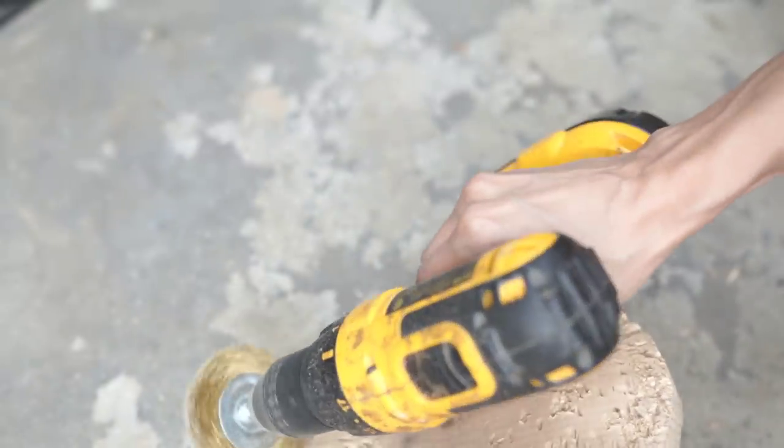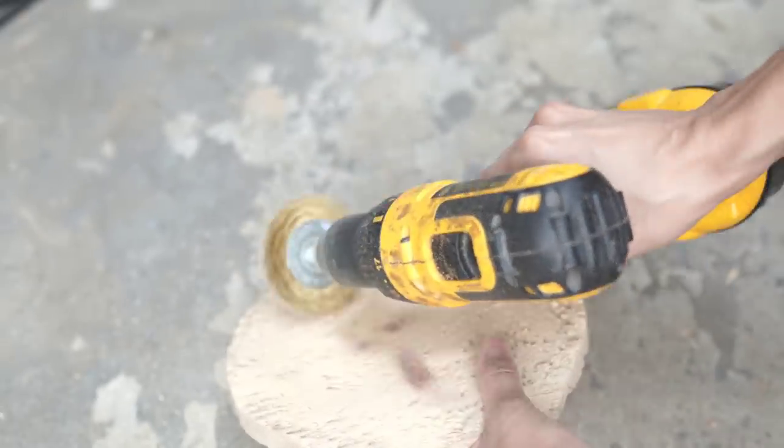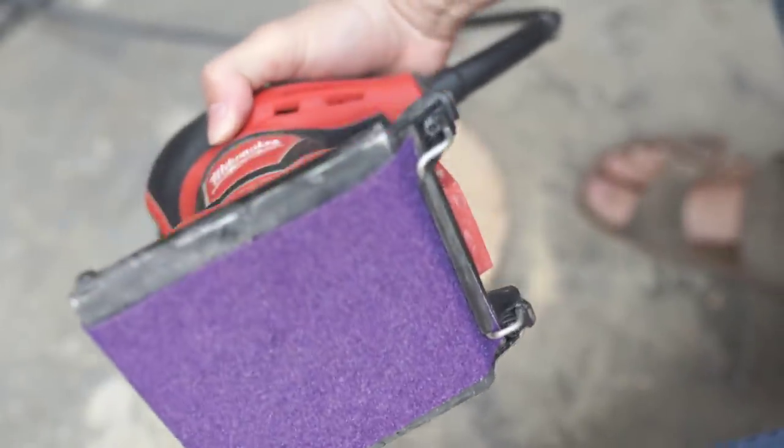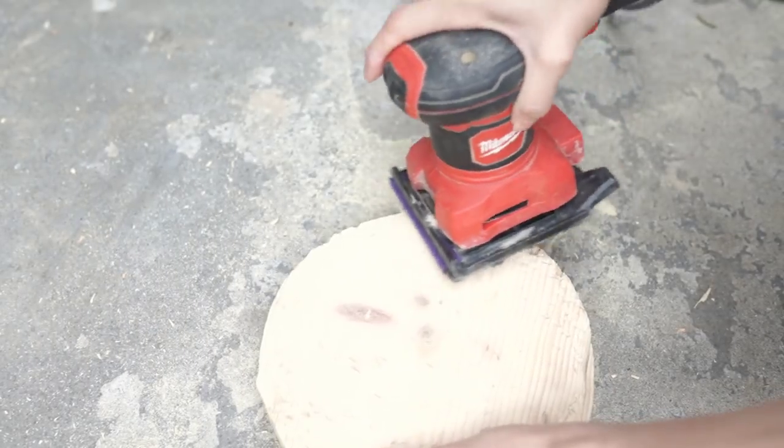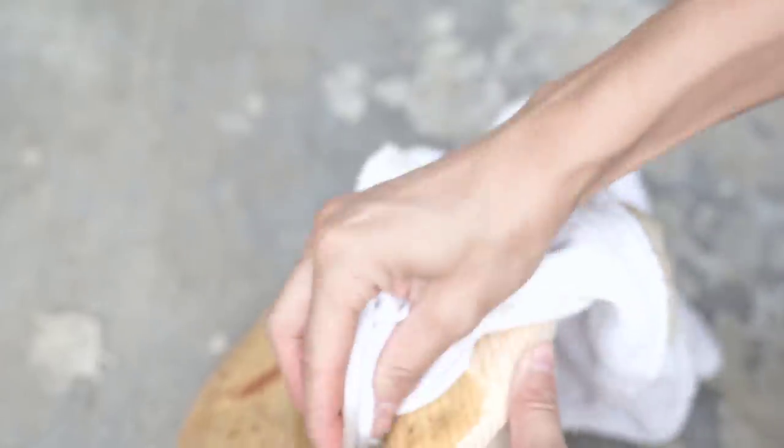I did the same process as the first one. I went in with a hammer, really distressed it, and then went in with my wire brush and distressed it even more with all of these different wire brushes. Then went in with an 80 grit sandpaper, sanded it all down, and then finished it off with a 120 sandpaper.